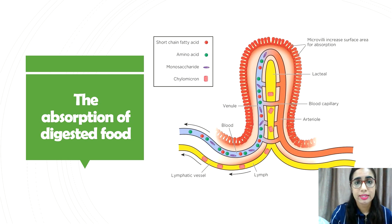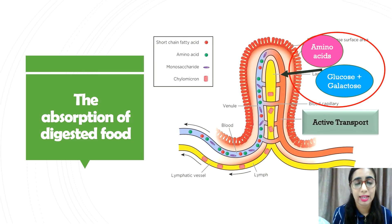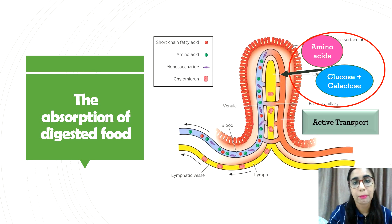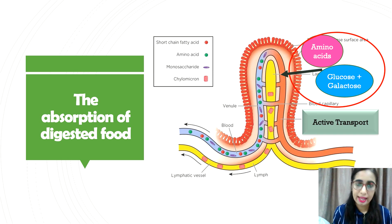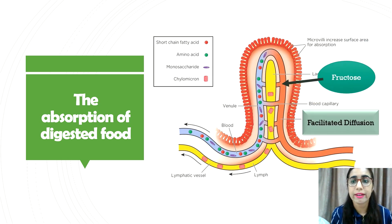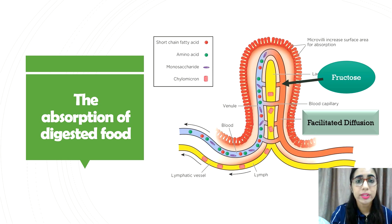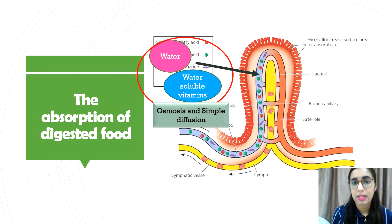Amino acids and simple sugars such as glucose, galactose, and fructose, which are water-soluble, will move from the epithelial cells of the villi into the blood capillary network. Amino acids, glucose, and galactose in the lumen are absorbed into the epithelial cell by active transport and then into the blood capillary. Fructose, however, is absorbed through facilitated diffusion. Water diffuses through osmosis from the lumen to the epithelial cells and then into the blood capillary.